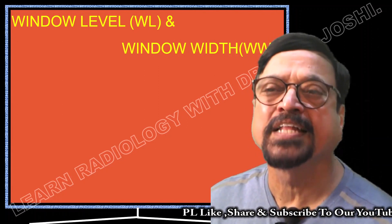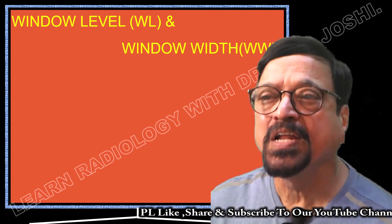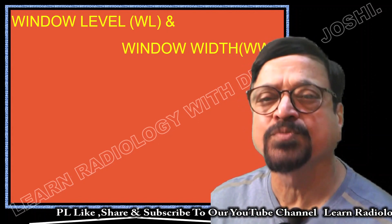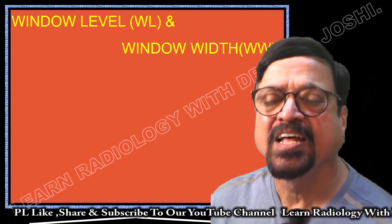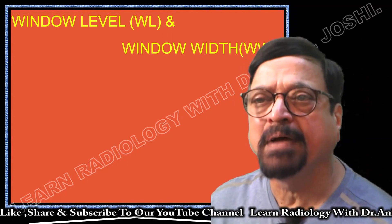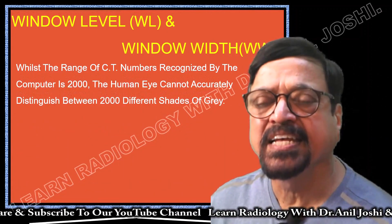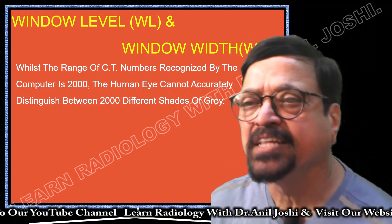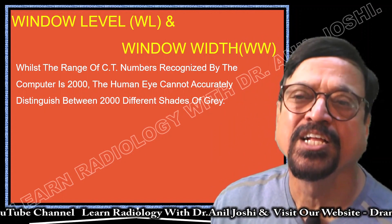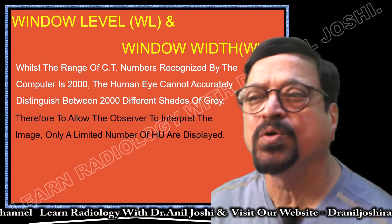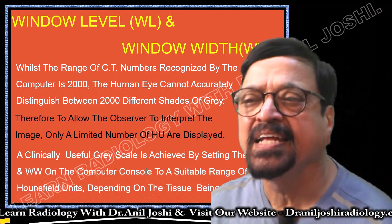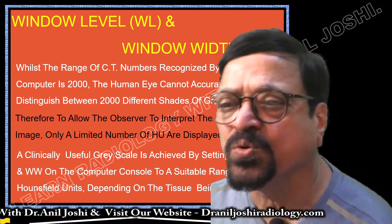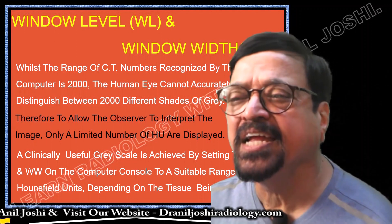Now, what is window level and window width? If we were to view all CT values from plus 2000 to minus 1000 simultaneously, the image would be messy. So we use a tool — window level and window width — to display only a required tissue spectrum. While the range of CT numbers recognized by the computer is 2000, the human eye cannot accurately distinguish 2000 different shades. Therefore, only a limited number of tissue shades are displayed. A clinically useful grayscale is achieved by setting the window width and window level on the computer console to a suitable range of Hounsfield Units depending on the tissue being studied.